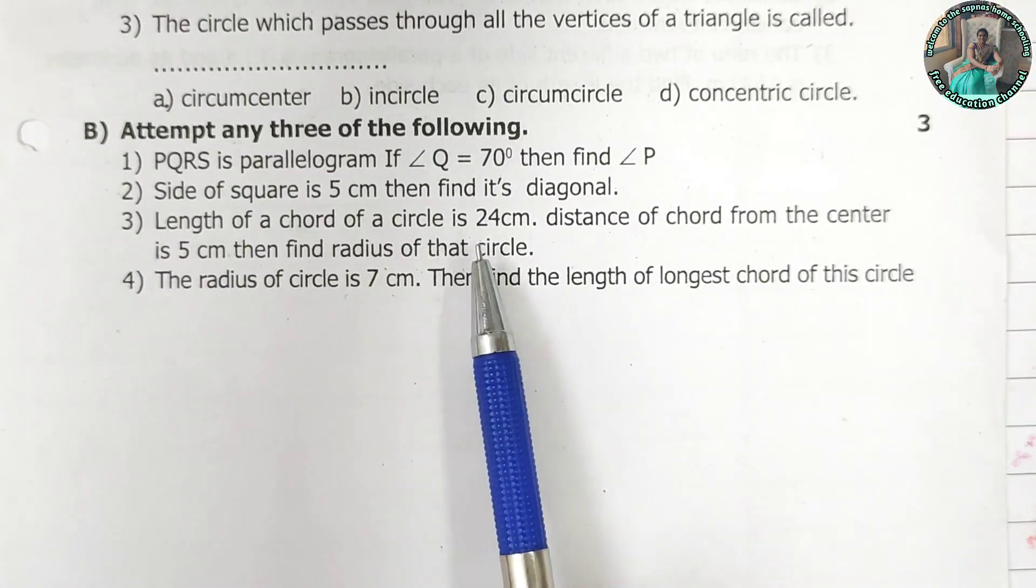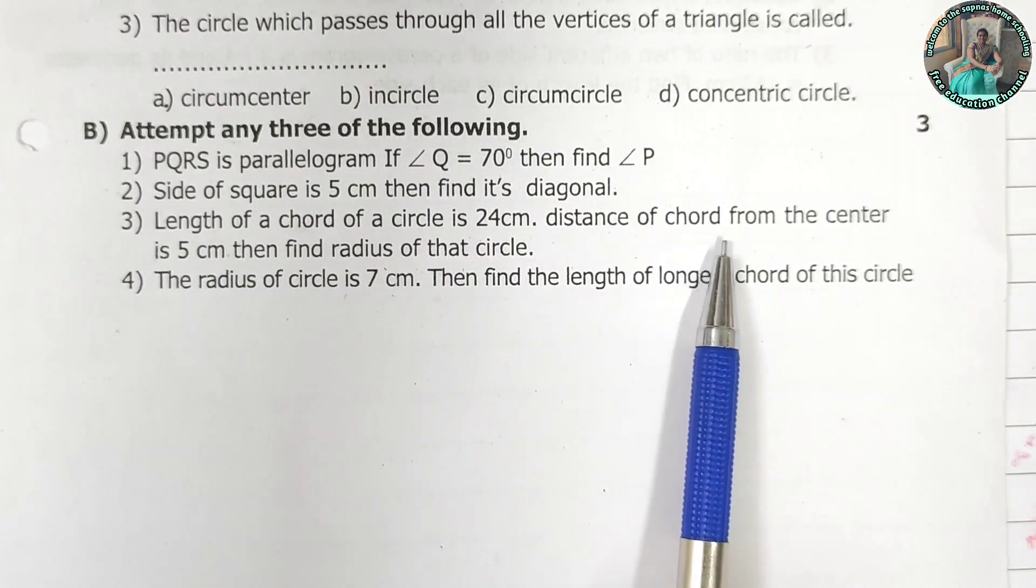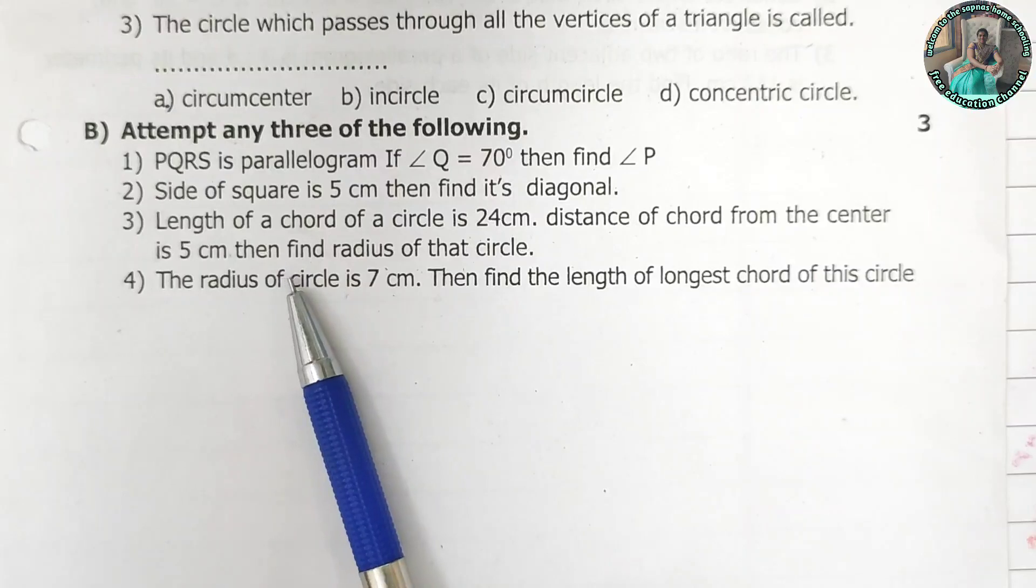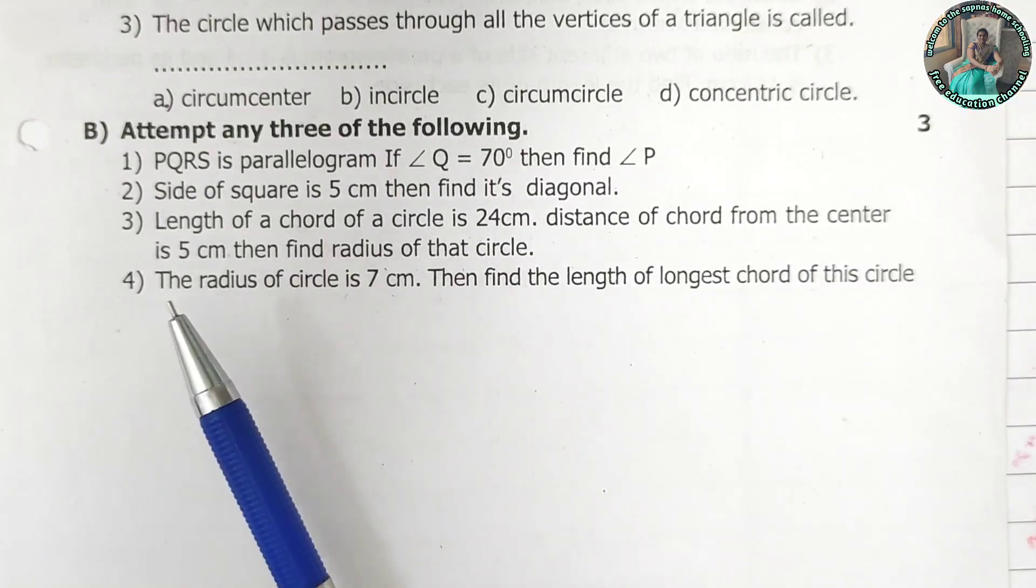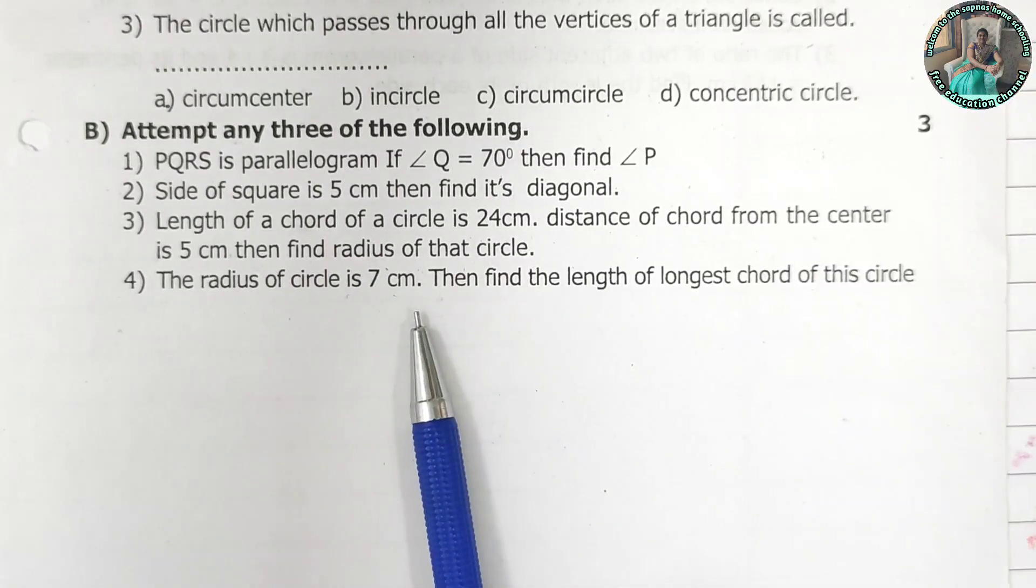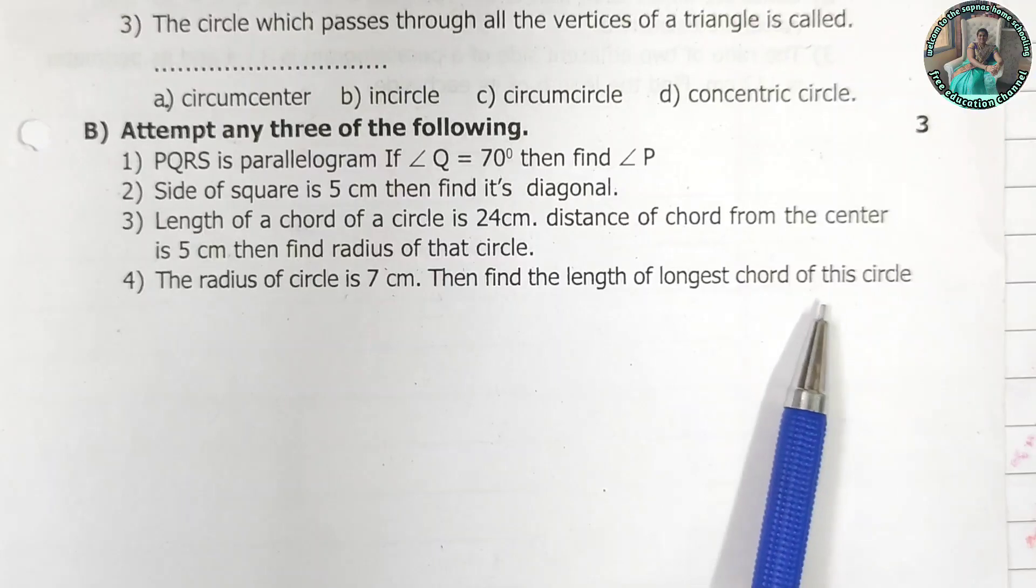Length of a chord of a circle is 24 cm. Distance of a chord from the center is 5 cm then find the radius of that circle. The radius of a circle is 7 cm then find the length of the longest chord of the circle.